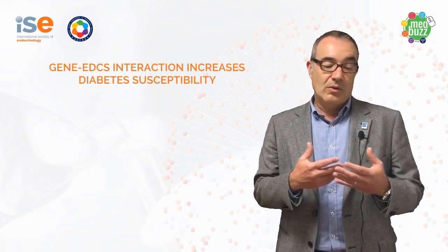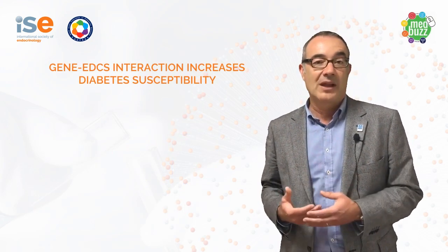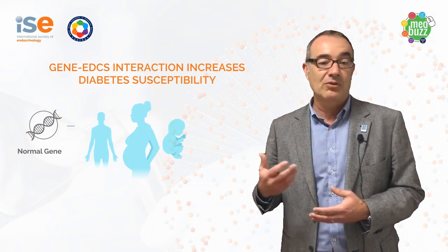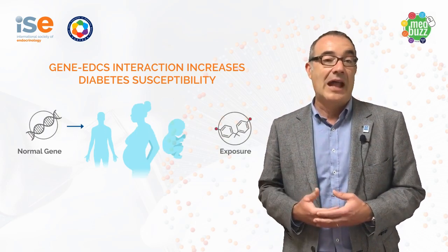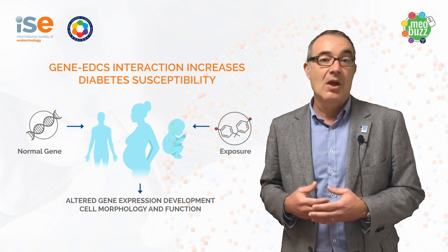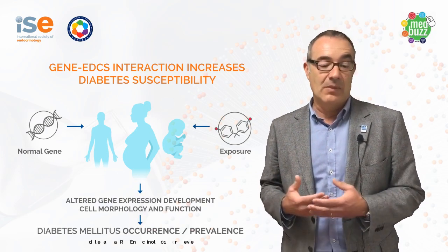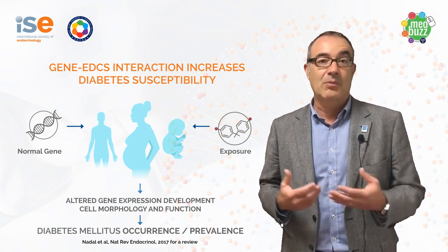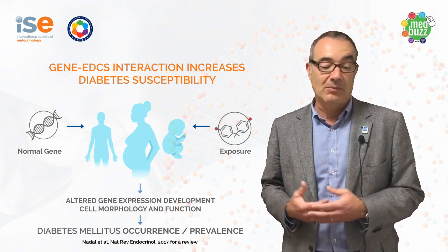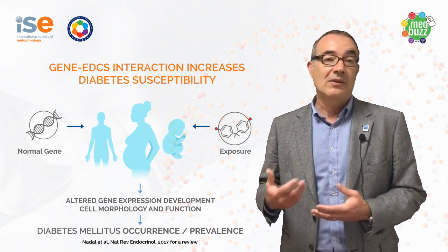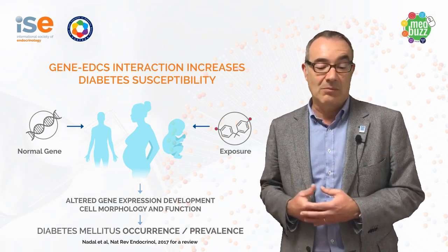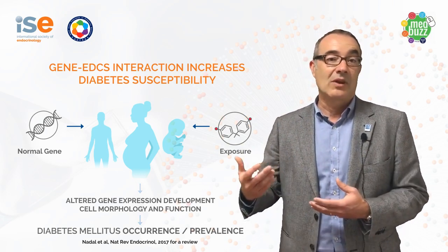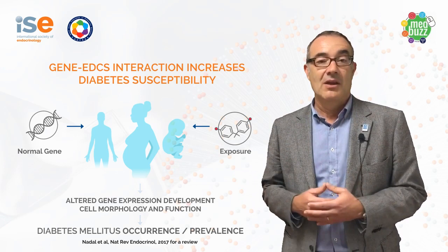During adulthood, but especially during development, during pregnancy and infancy, exposure to endocrine disruptors alters gene expression, alters the development, and changes the morphology and function of important types of cells in metabolism. And that increases the occurrence of diabetes mellitus and is going to end in an increase in the prevalence of this pathology.